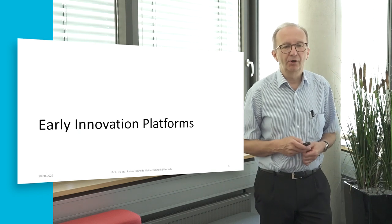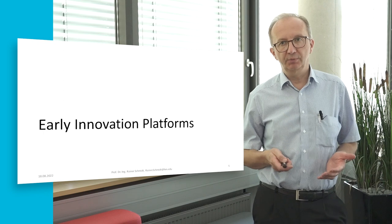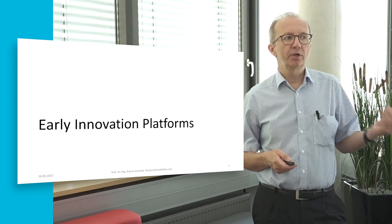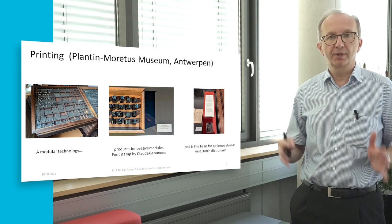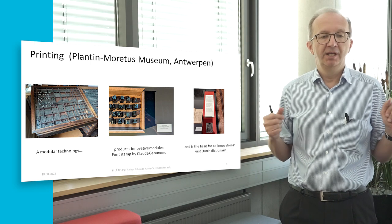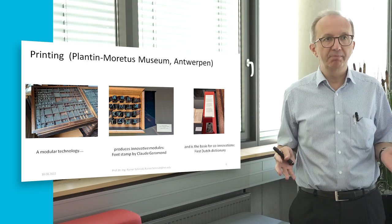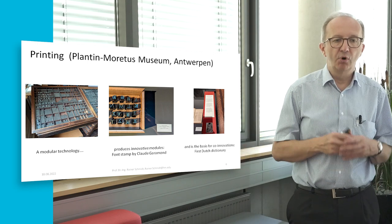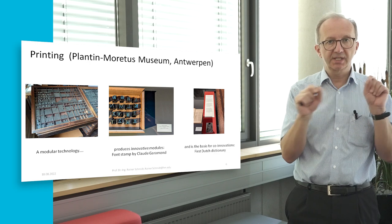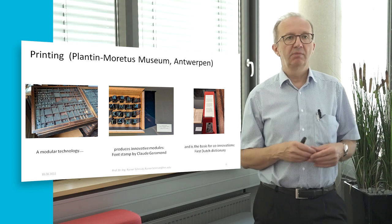Let's have a look at the early innovation platforms. People didn't call them innovation platforms, but we can see the first important ideas of innovation platforms. If you go to Antwerp and visit the Plantin-Moretus Museum, you will get an insight into the first steps of industrial printing. Plantin-Moretus was very famous because they delivered all the Bibles for the Spanish world. Let's look at this printing technology: we have a modular technology where we can use these type pieces and combine them to print a book, a newspaper, and so on.